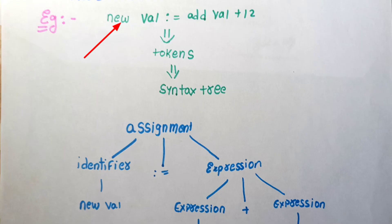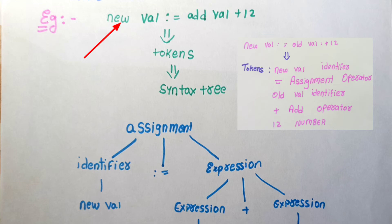Let's look at the example. Here is new val. We have to take the same value and represent the tokens as a syntax tree. First, we have an assignment with a new val identifier.